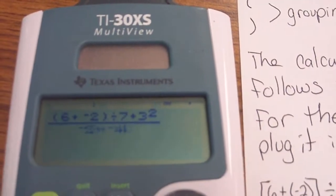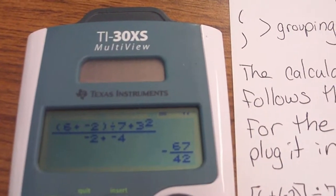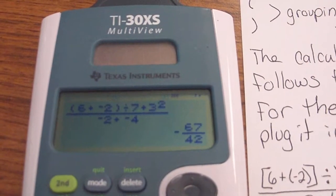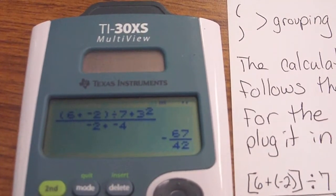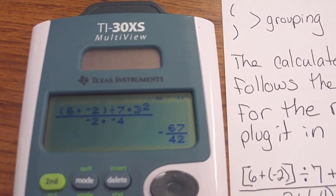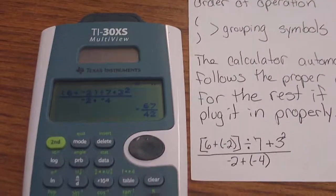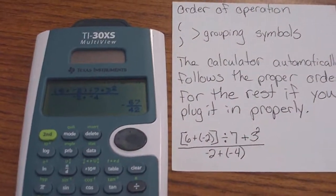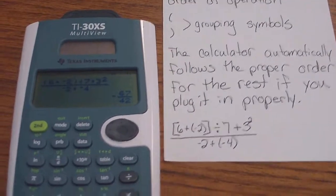Now that I have it all entered in, if I hit enter, it's going to do the entire problem for me to simplify it. So it takes a lot of the calculations that you would have to do out. But the thing you really need to make sure if you're going to use your calculator is that you're entering everything in in the proper order, grouping together the things that need to be grouped together.